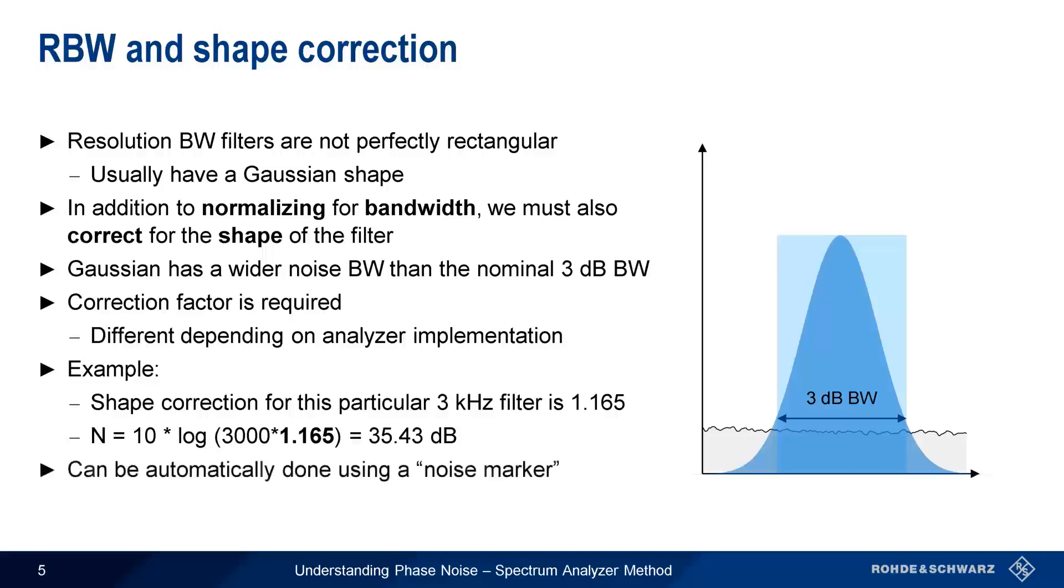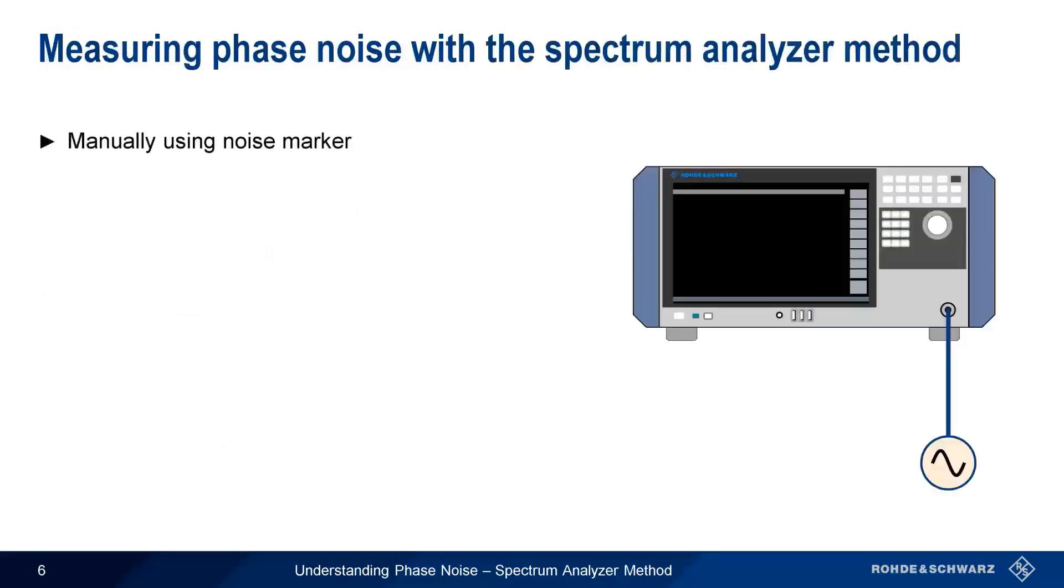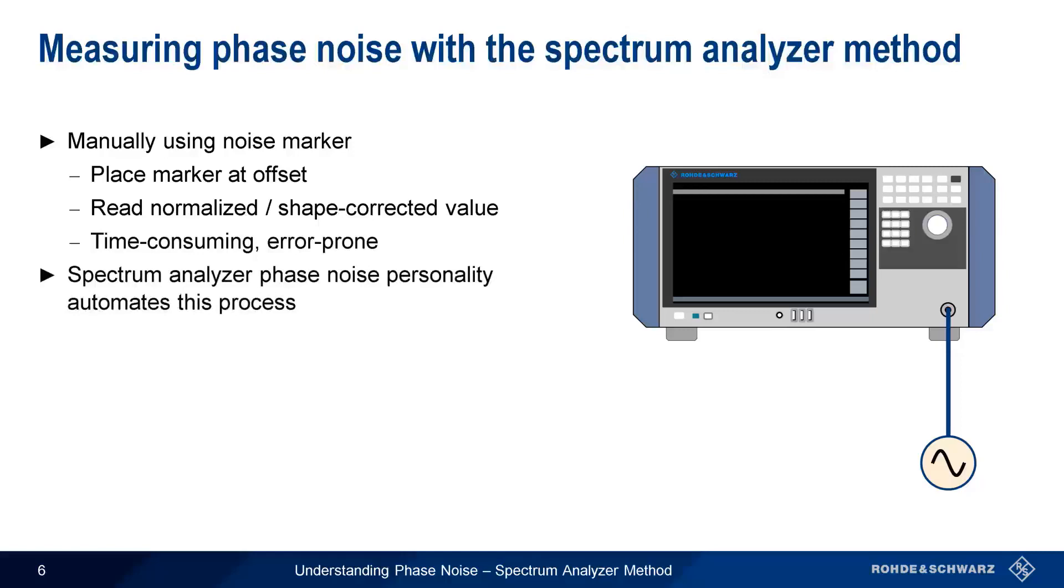Note that most spectrum analyzers can automatically apply both types of correction, bandwidth and shape, by using a special noise marker function. We could therefore use this noise marker to manually make phase noise measurements. However, like most other manual processes, measuring phase noise this way is both time-consuming and error-prone. Many spectrum analyzers therefore have a phase noise personality or option that automates the process, with the results presented in both graphic and numeric formats.